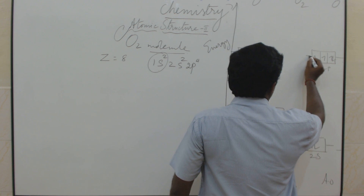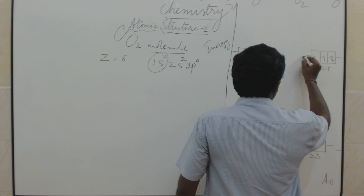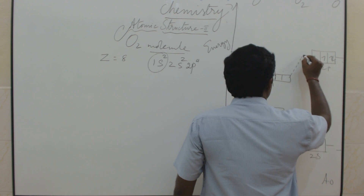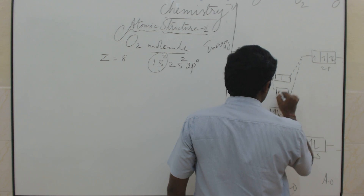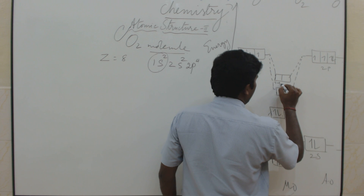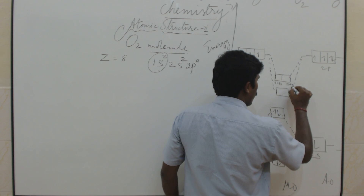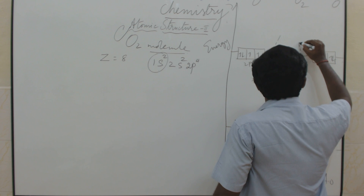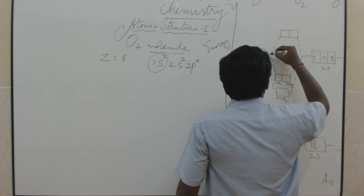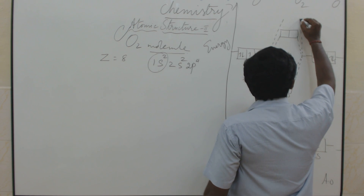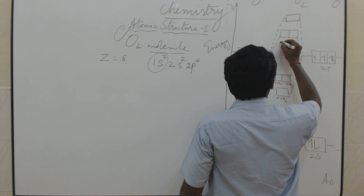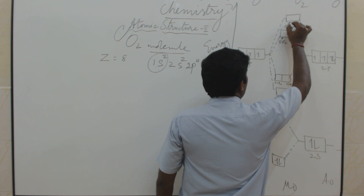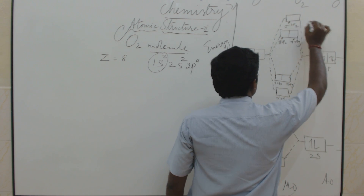These two atomic orbitals combine to form molecular orbitals. One gets lower energy, called the bonding molecular orbital: π2px, π2py, σ2pz. In the anti-bonding state also: π*2px, π*2py, and σ*2pz.